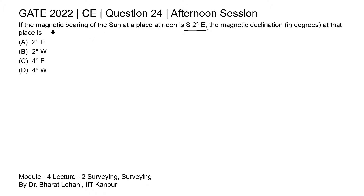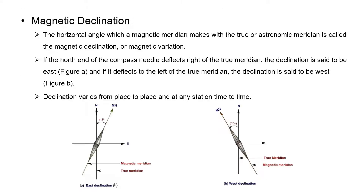You may study this topic in detail in Module 4, Lecture 2, Surveying by Dr. Bharat Lawani at Kanpur. Magnetic declination is the horizontal angle which a magnetic meridian makes with the true or astronomic meridian. As can be seen in these two figures, in Figure A the magnetic meridian makes angle delta with respect to the true meridian towards the rightward direction.